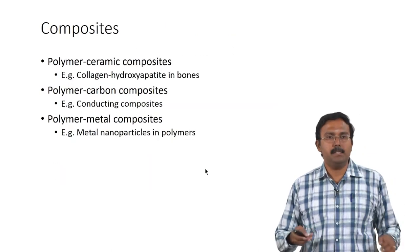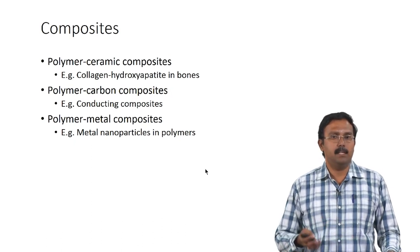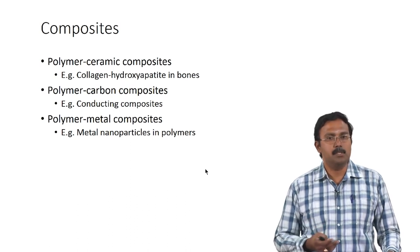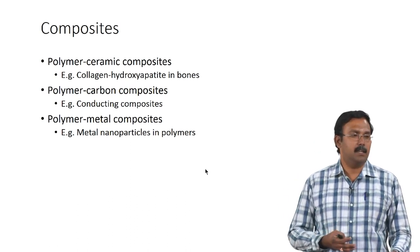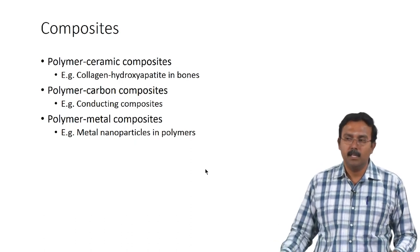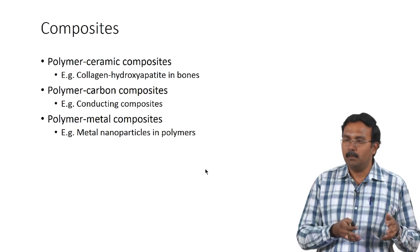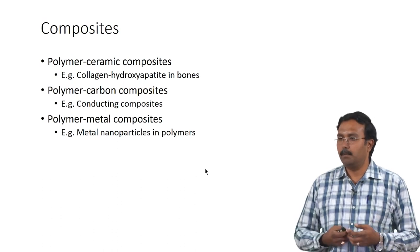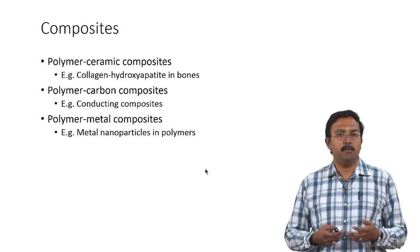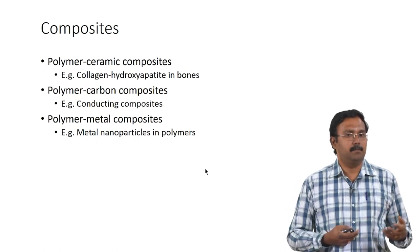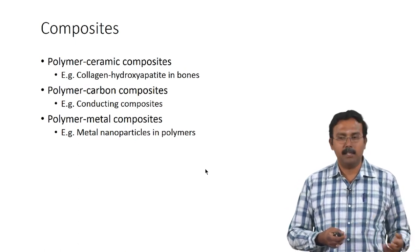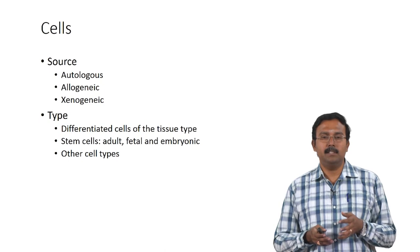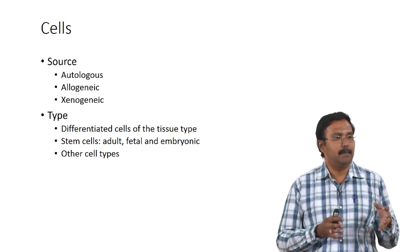Composites can be anything — polymers and ceramics put together would be a composite. Collagen-hydroxyapatite is a composite, as found in bones. You can also have polymers and carbons combining to form conducting composites — for example, PCU along with graphene to improve electrical properties. Polymers can also be blended with metal nanoparticles to provide antibacterial properties or to deliver drugs.